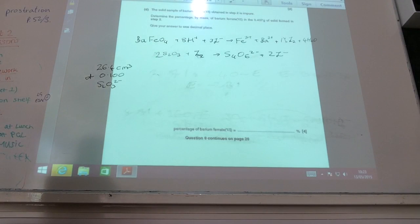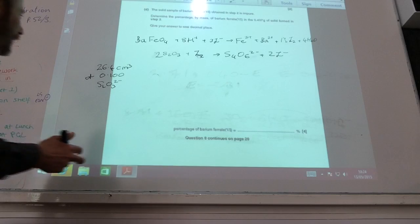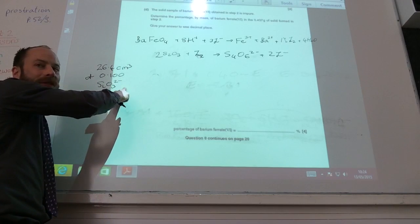Right, so this is your calculation now. I've written the equations up on the board as they've appeared on the previous page. The solid sample of barium ferrite is impure. Calculate the percentage by mass of barium ferrite in the 0.437 grams of solid formed in step two.